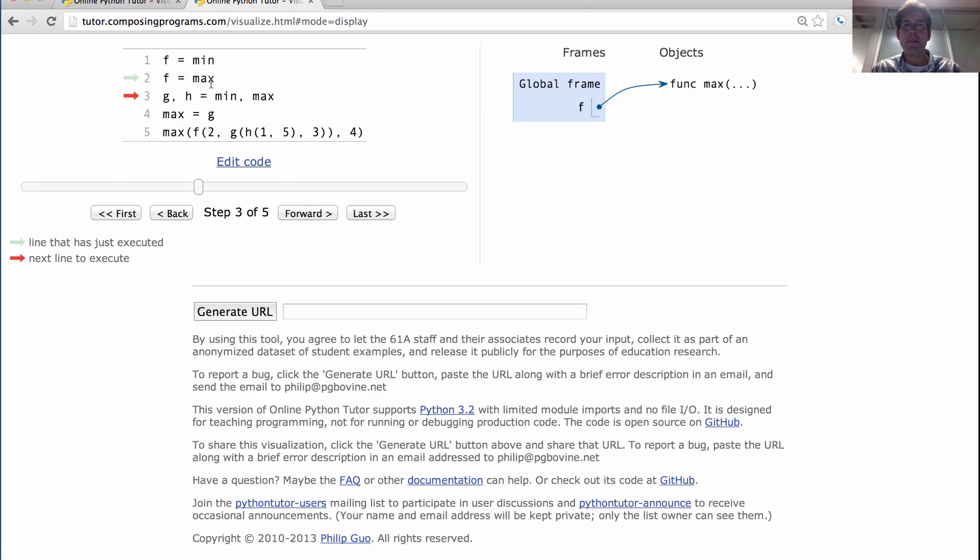Then we bind f to max. Now remember the rule that a name can be bound to at most one value in a frame. So since we've rebound f to max, we've lost the binding between f and min. That's just gone. Now we say g and h are bound to min and max. So we evaluate min, that's the min function. We evaluate max, that's the max function. And we bind g and h to min and max. Notice there's only one min function, there's only one max function. But the max function now has two names, f and h. The min function has the name g.